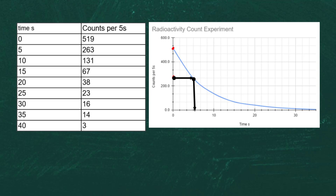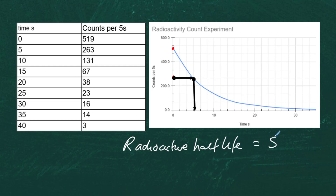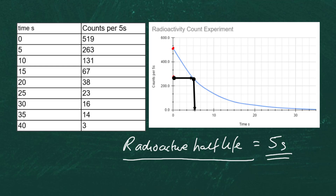From there we can measure the half-life of that particular radioactive substance. We can see that roughly it's going to be five seconds, so the radioactive half-life of that substance is equal to five seconds. This tells us that every five seconds the radioactive counts will go down by a half — you can see from our table: 519 down to 263, roughly half again, every five seconds.